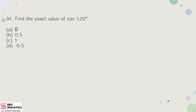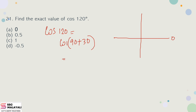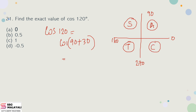21st question: Find the exact value of cos 120°. cos 120° = cos(90° + 30°). In the second quadrant, cosine is negative, so cos(90° + 30°) = −sin 30° = −1/2, which equals −0.5. Option D is the answer.